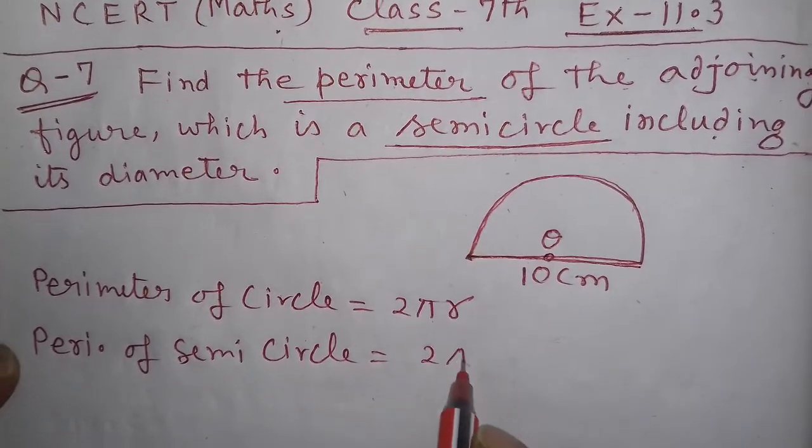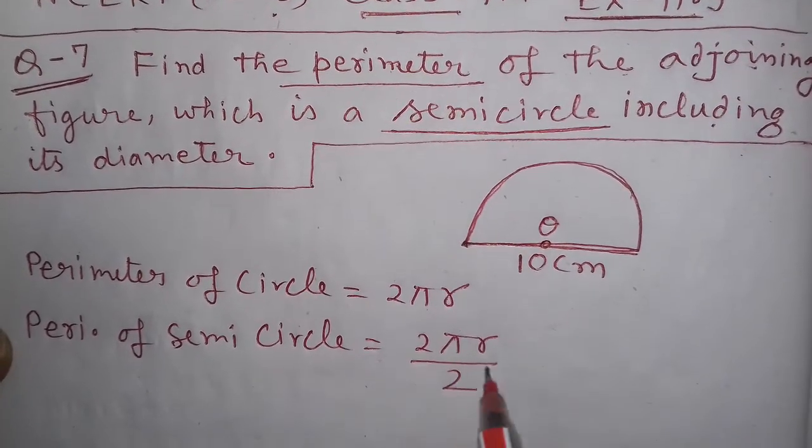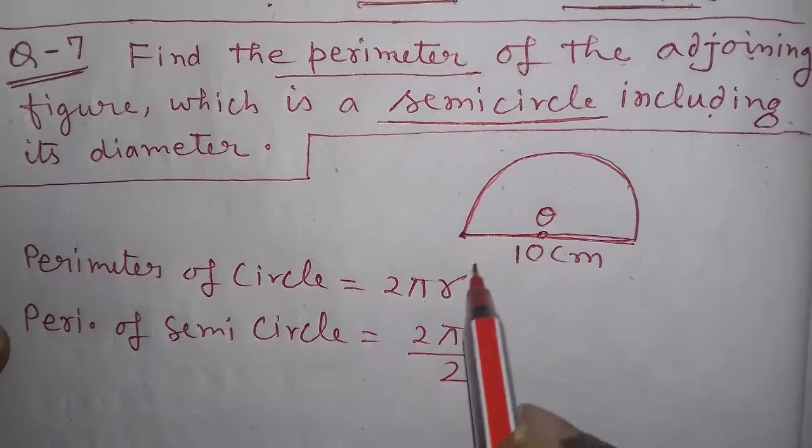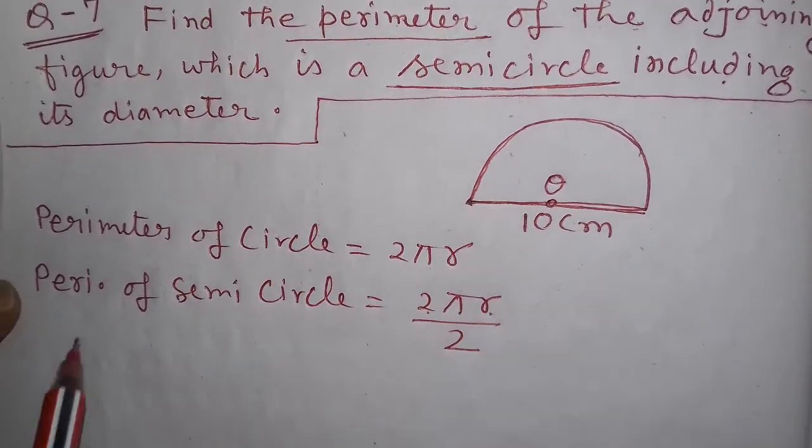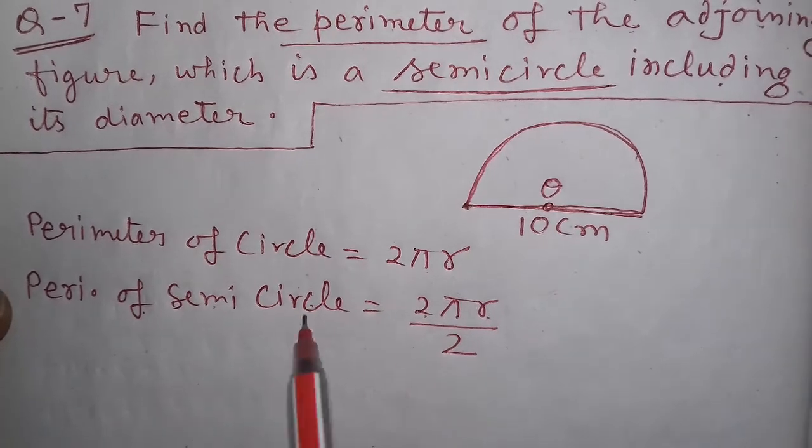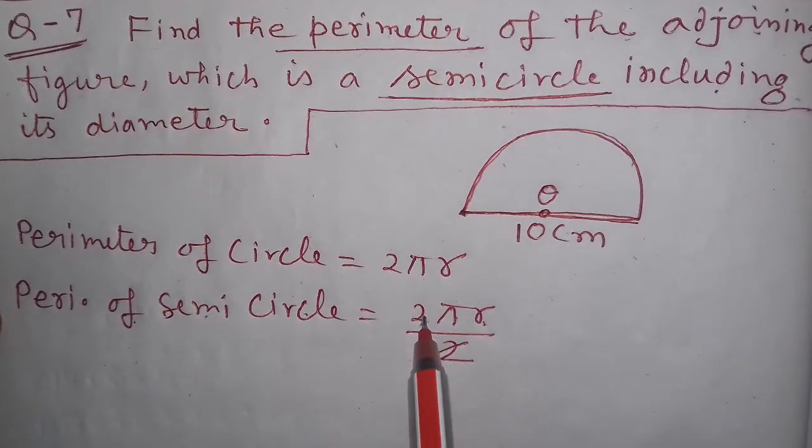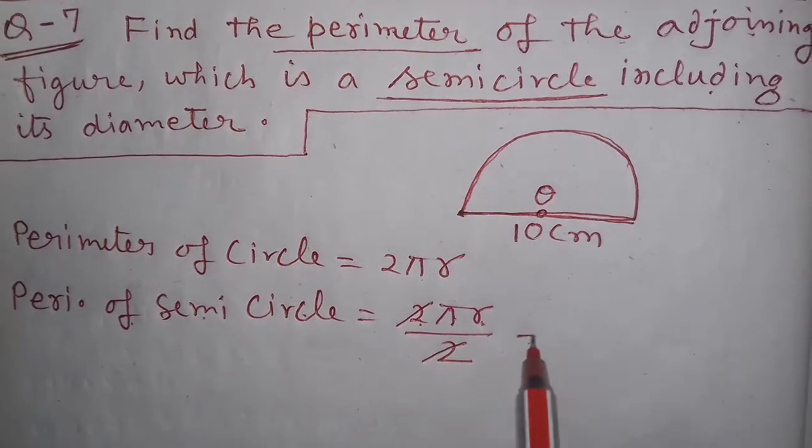The perimeter of a semicircle equals 2πr divided by 2, which is half of the circle's perimeter. So 2πr/2, the 2s cancel out, giving us πr.